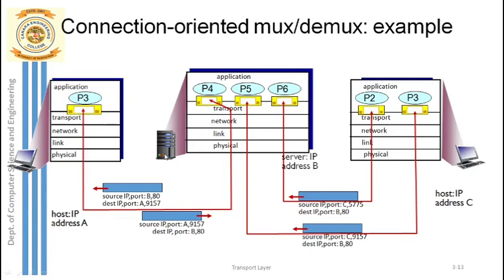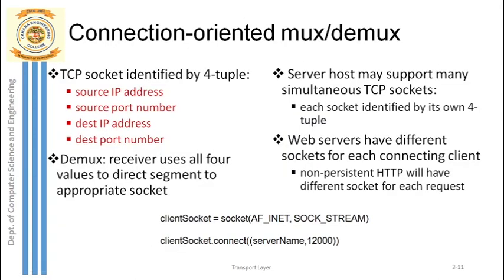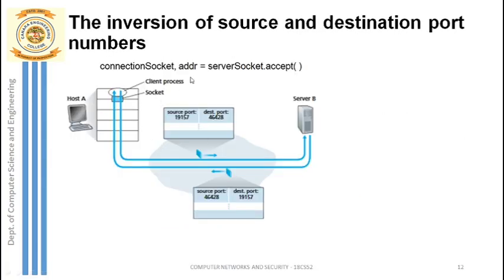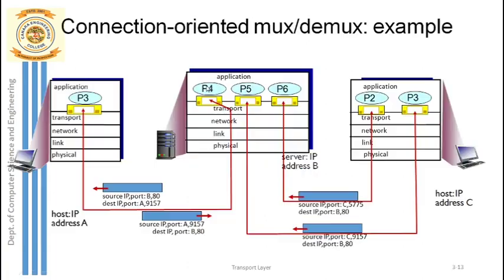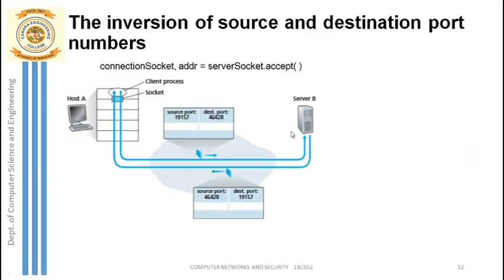The server has two sockets: one welcome socket through which the connection is established, and one new socket created only after accepting the client's request. This newly created socket is dedicated exclusively to that specific host — only that host can communicate through it. The new socket is assigned a new port number, for example 12000, which the client needs to know in order to exchange data.